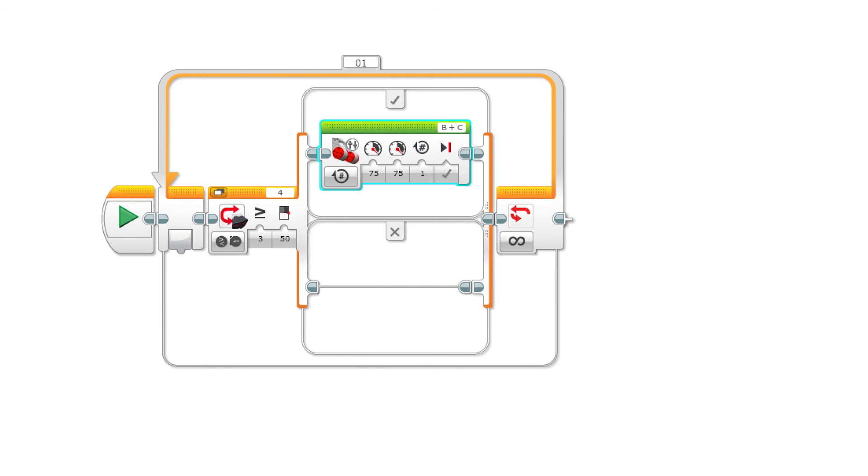When the robot reads a value of over 50%, it's probably more than 6 inches from the wall. Remember to put everything inside of an infinite loop.